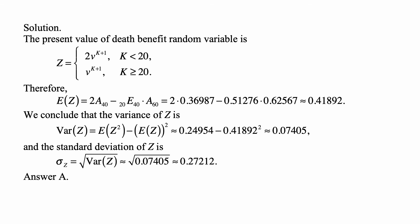This means that the expected value of Z is equal to 2 times A40 minus 20E40 times A60. Basically, the benefit is 2 in the first 20 years and then it's 1. That equals 2 times 0.36987 minus 0.51276 times 0.62567, which is approximately 0.41892.